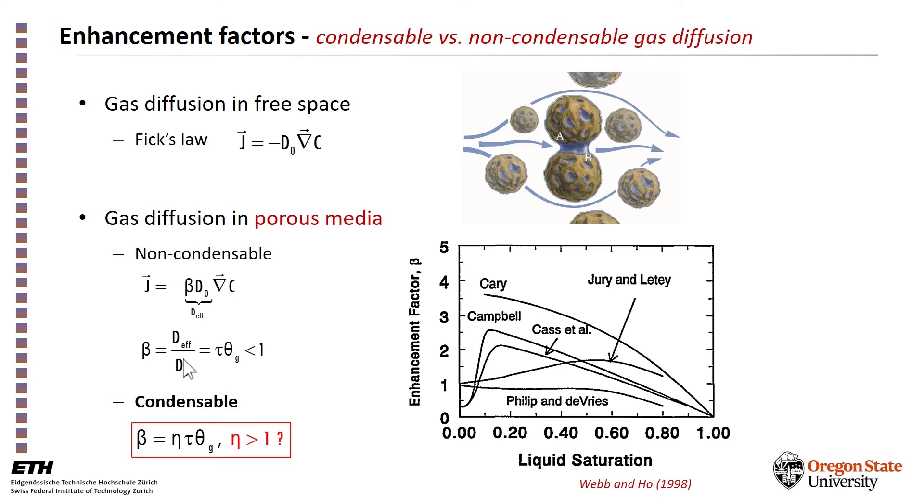we have a diffusion coefficient that accounts for the tortuosity of the pathways in the soil, and this beta factor will probably be less than 1 in most cases. In fact, it is guaranteed to be less than 1. Whereas for the condensable gases, the theory of Philip and DeVries suggested that this coefficient can be greater than 1.